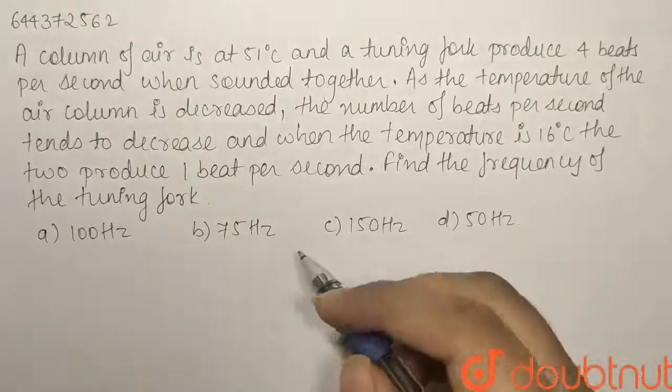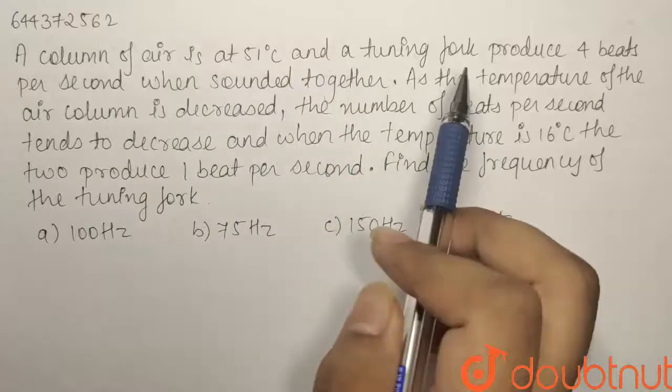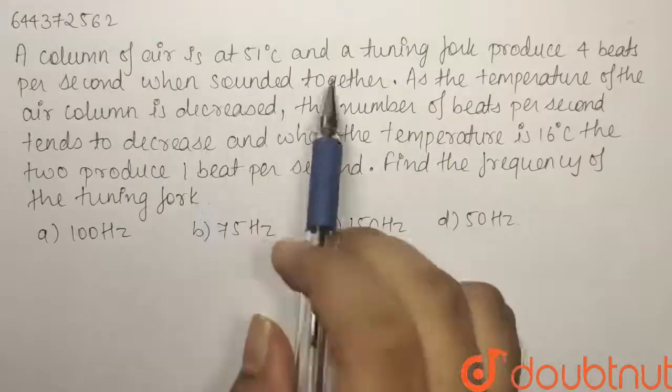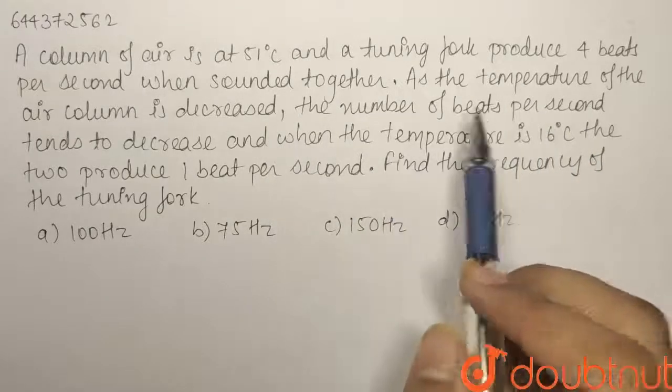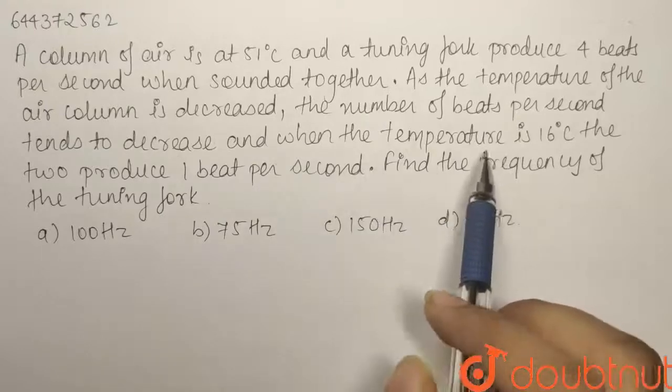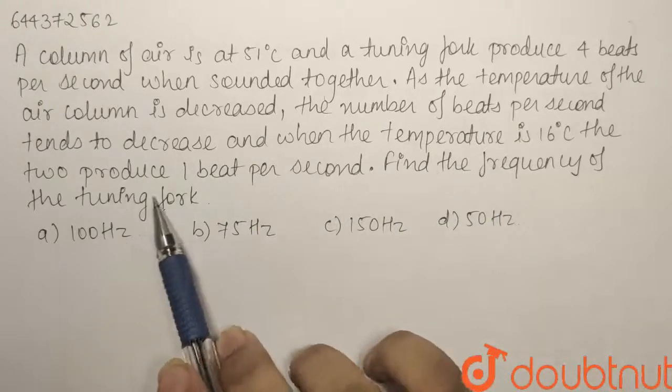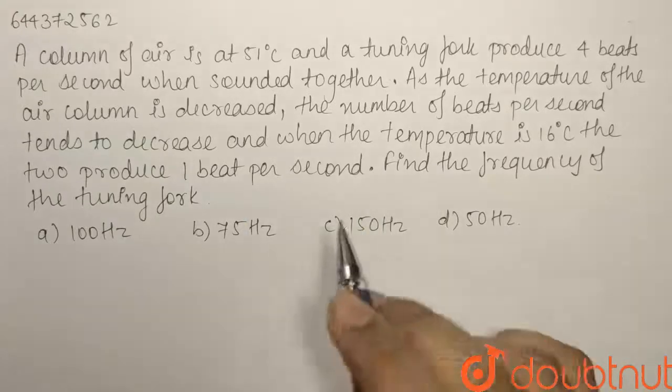We have a question from the chapter waves. A column of air is at 51 degrees Celsius and the tuning fork produces 4 beats per second when sounded together. As the temperature of the air is decreased, the number of beats per second tends to decrease and when the temperature is 16 degrees Celsius, the two produce 1 beat per second. We have to find out the frequency of the tuning fork.